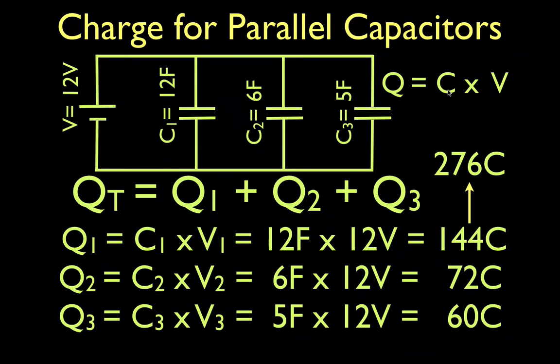Well, the total capacitance for capacitors in parallel, you just add them up. The total capacitance for this circuit would be 12, plus 6 is 18, plus 5 is 23, and the voltage would still be 12 volts. That's the total voltage.